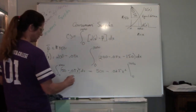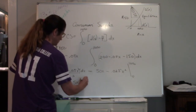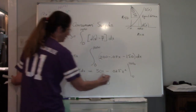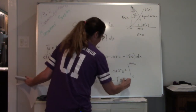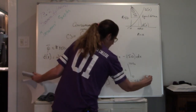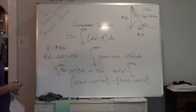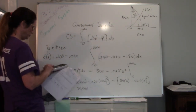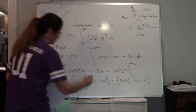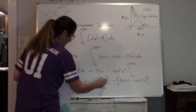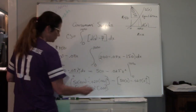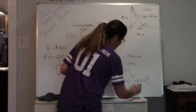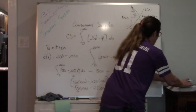Plugging in 1000: 50 times 1000 minus 0.025 times 1000 squared. Then subtract the result when plugging in 0 — which is just zero. So we get: 50,000 minus 0.025 times 1,000,000, which is 50,000 minus 25,000. That gives us a consumer surplus of $25,000.